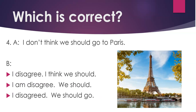Number 4. I don't think we should go to Paris. Options: A: I disagree. B: I think we should. C: I am disagree. D: We should. The correct answers are: I disagree. I think we should.